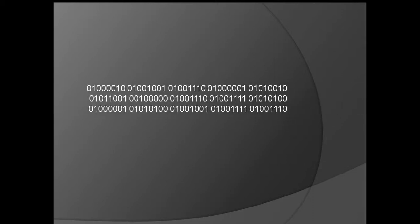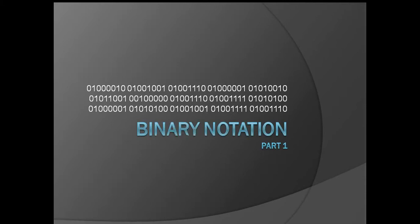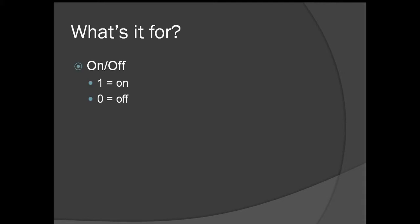Hello there! Today we're going to talk about binary notation and what binary is for. Binary has a system that follows this rule of on and off, where one stands for on and zero stands for off. So it has only two states.